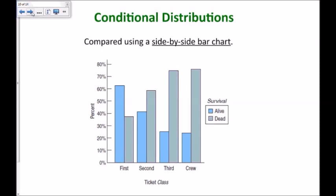Another way of comparing distributions is by using a side-by-side bar chart. Here I have bars for first, second, third class, and crew, but I've lined up the percentage who lived and percentage who died so that I can easily compare those for each of the ticket class.